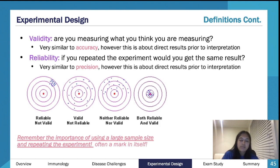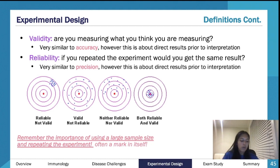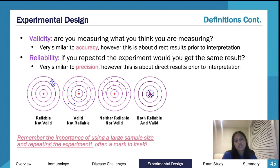Validity is basically: is this measuring what it's meant to measure? Is your experiment designed in a way that actually tests the IV and the DV? It's similar to accuracy, but accuracy is about whether your measurement is actually correct — like if your plant has grown by 30 centimeters but you're using a terrible ruler. Reliability is: if I repeated the experiment, would the result be the same? Precision is: are all my results within a narrow range?